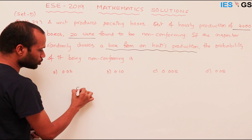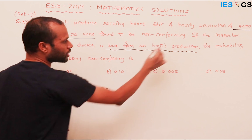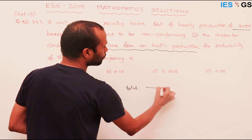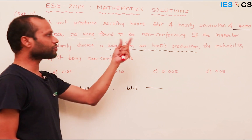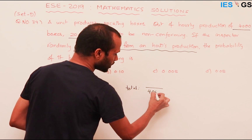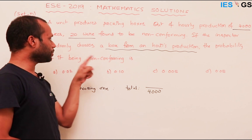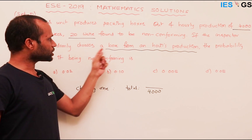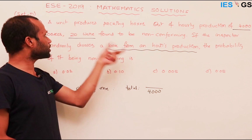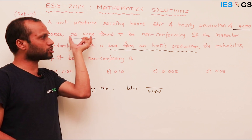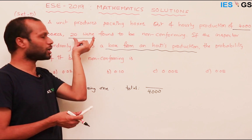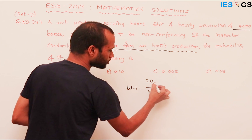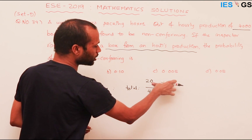If he is randomly choosing one box from an hour's production, the total number of chances is 4000C1, which is 4000. Now, how many are non-conforming out of 4000? Twenty. So if the chosen box has to be non-conforming, it must come from those 20 non-conforming products. The number of chances is 20C1, which is 20.